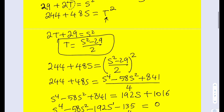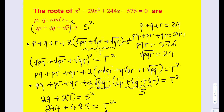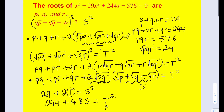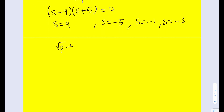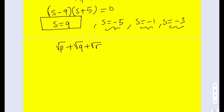Going back to the original problem: we're looking for the sum of square roots of real numbers, so s must be positive. All other solutions are negative, so the only valid value is s = 9. Therefore, the square root of p plus the square root of q plus the square root of r equals 9. Obviously there are other ways to solve this problem. Thank you for watching — feel free to comment, like, and subscribe. See you in the next video. Take care, bye-bye.